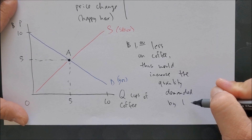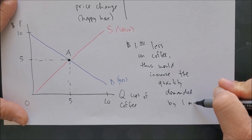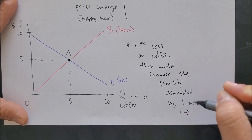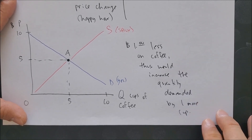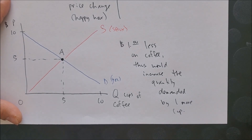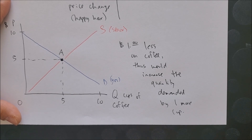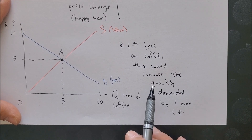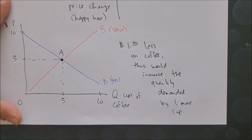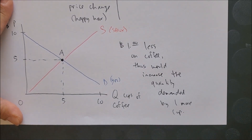The quantity demanded increases by one more cup of coffee. This makes sense — during happy hour you are more likely to consume one more of a certain good because the price is less. In the case of coffee, you might purchase one more cup and give it to a friend or your professor.